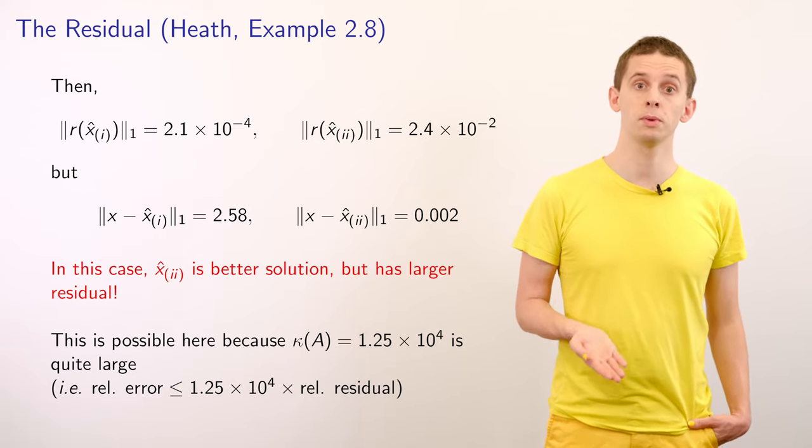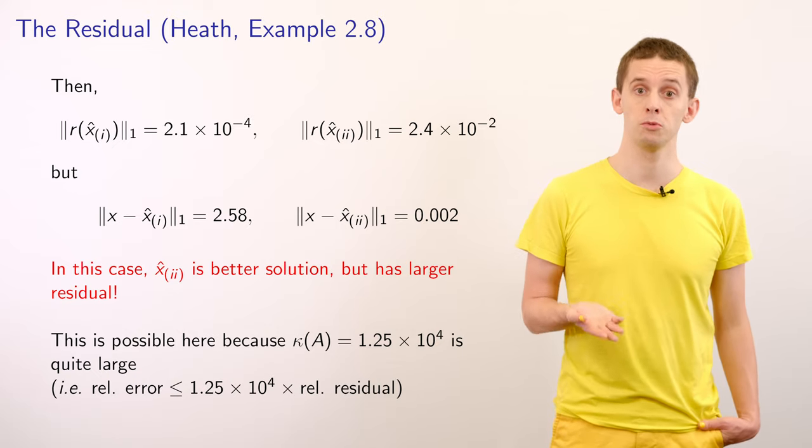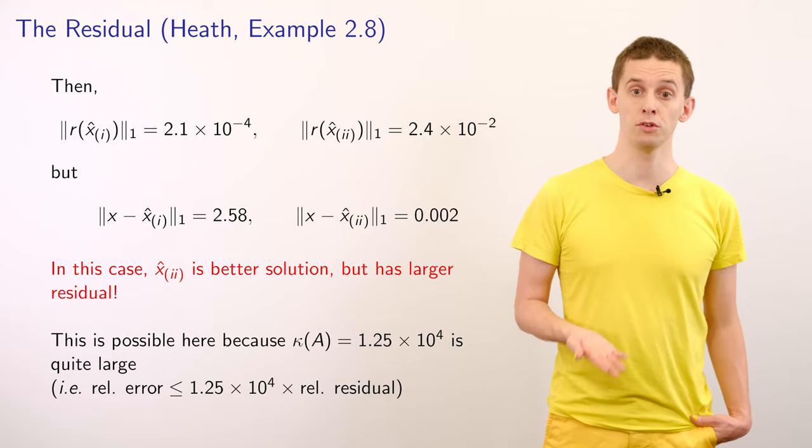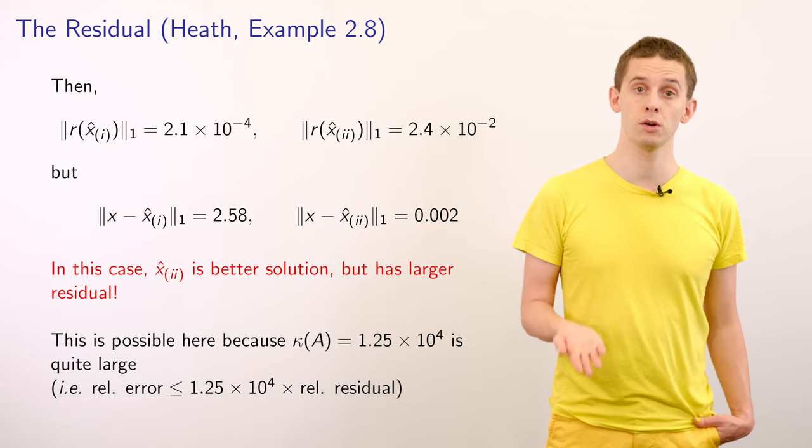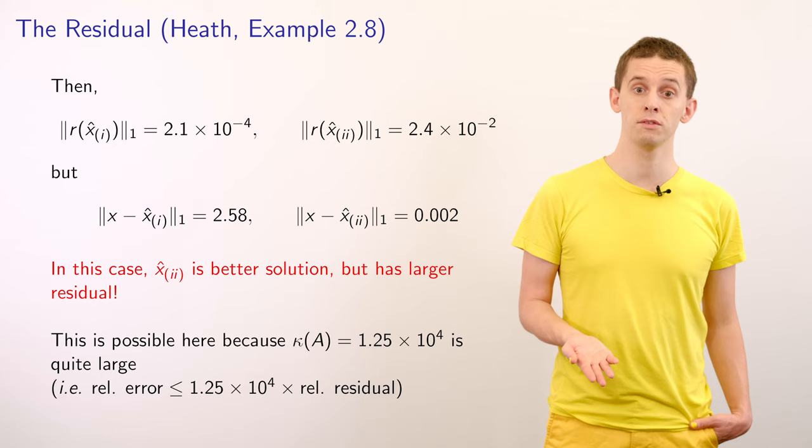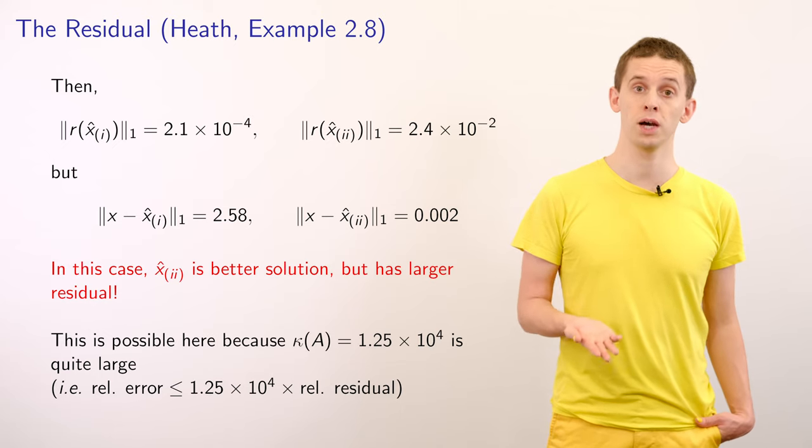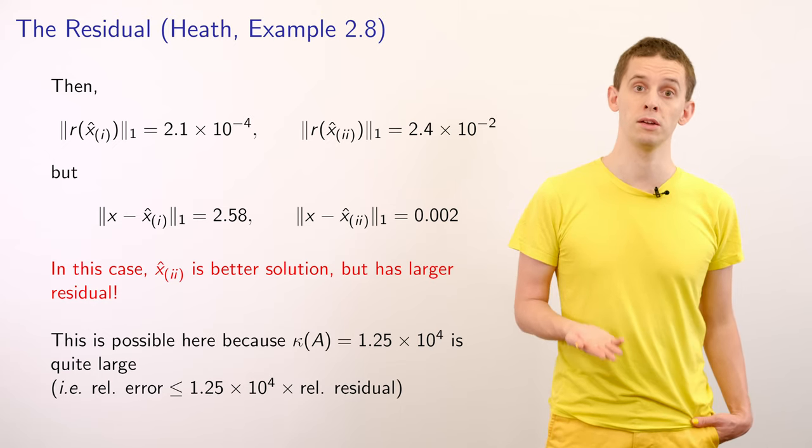And this is possible because the condition number for this matrix is equal to 1.25 × 10⁴. And therefore we still have this inequality satisfied that the relative error is less than or equal to 1.25 × 10⁴ times the relative residual.